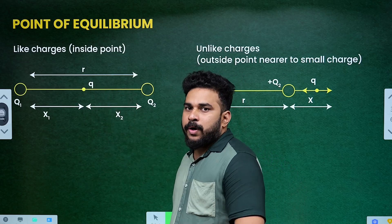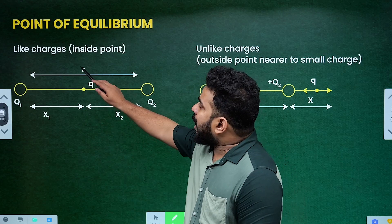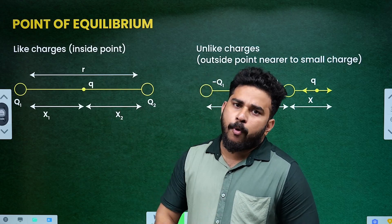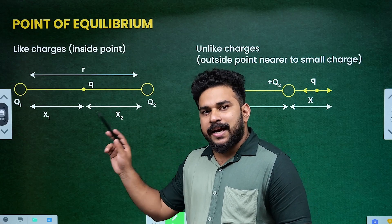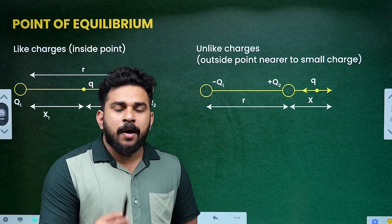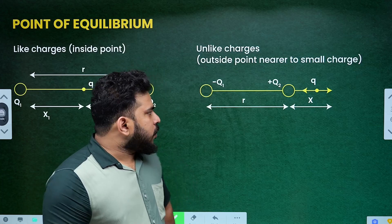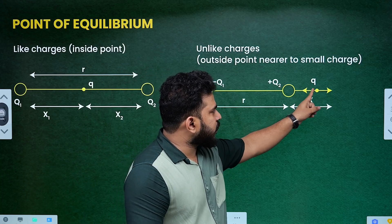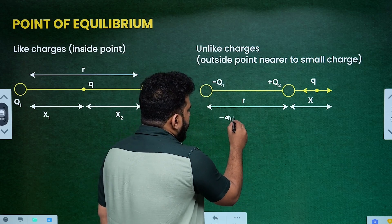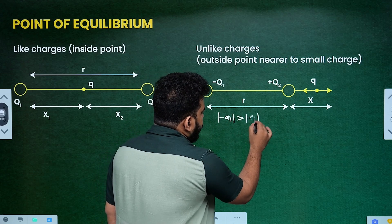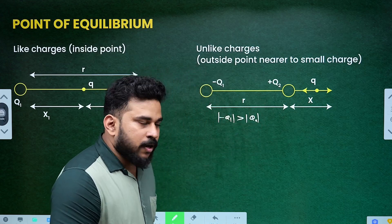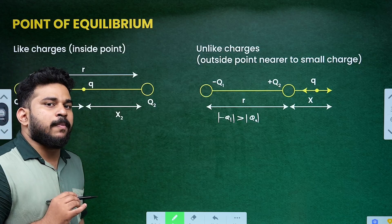The point of equilibrium is where the third charge experiences no net force. For unlike charges, the point of equilibrium lies between the two charges. The magnitude: if minus Q1 is greater than Q2, the equilibrium point is closer to the smaller charge. For like charges, the equilibrium point is outside between them.